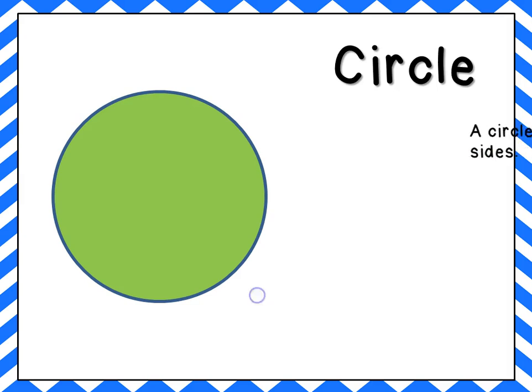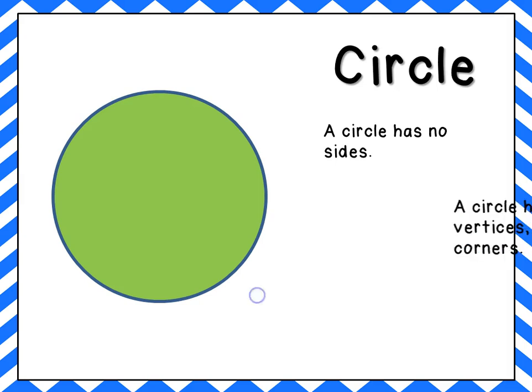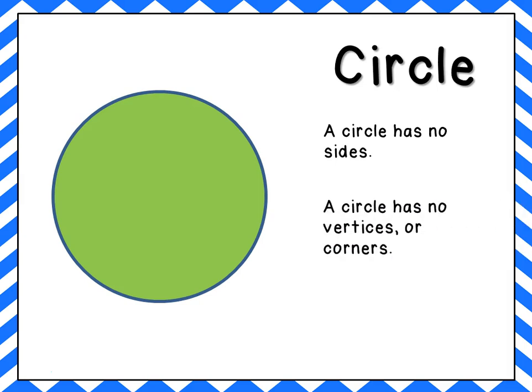This is a circle. A circle has no sides at all — a side is a flat surface. A circle has no vertices or corners. A circle is completely round.